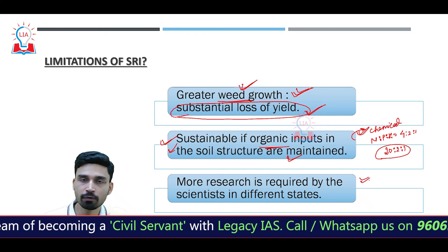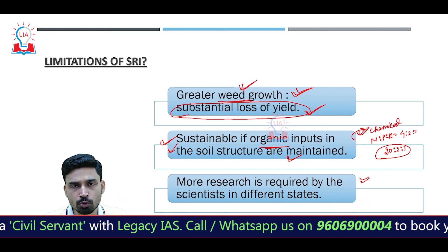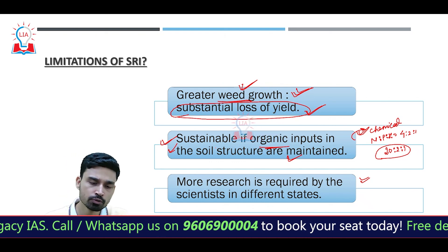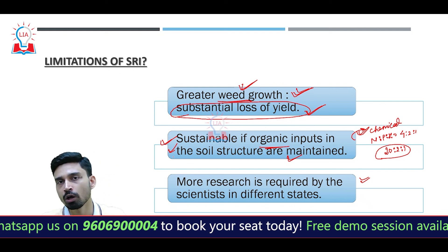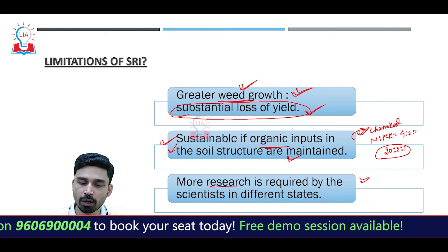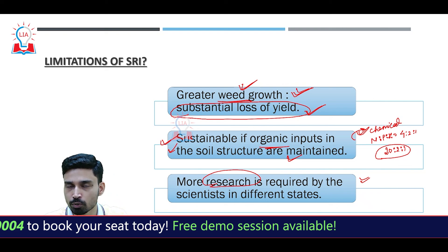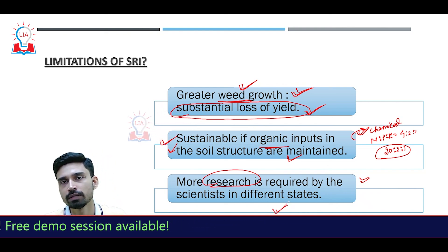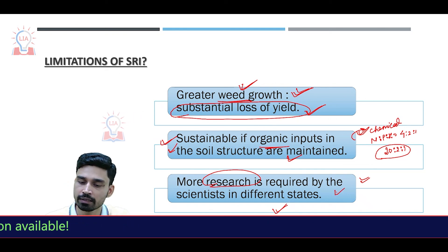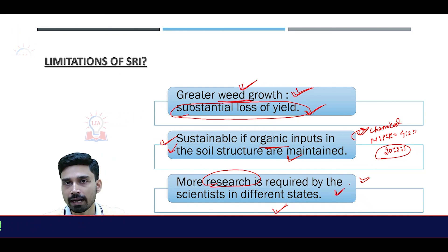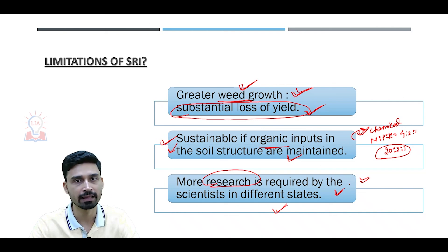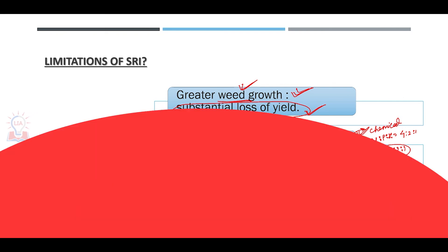Such a skewed ratio of chemical fertilizer use can undermine the advantages expected from SRI. Since India is a land of diversity, including in soil types across different states, a one-size-fits-all approach is not suitable. More research is required by different state agricultural universities to understand the benefits and limitations of SRI in specific regions, so governments can take adequate action. Thank you very much.